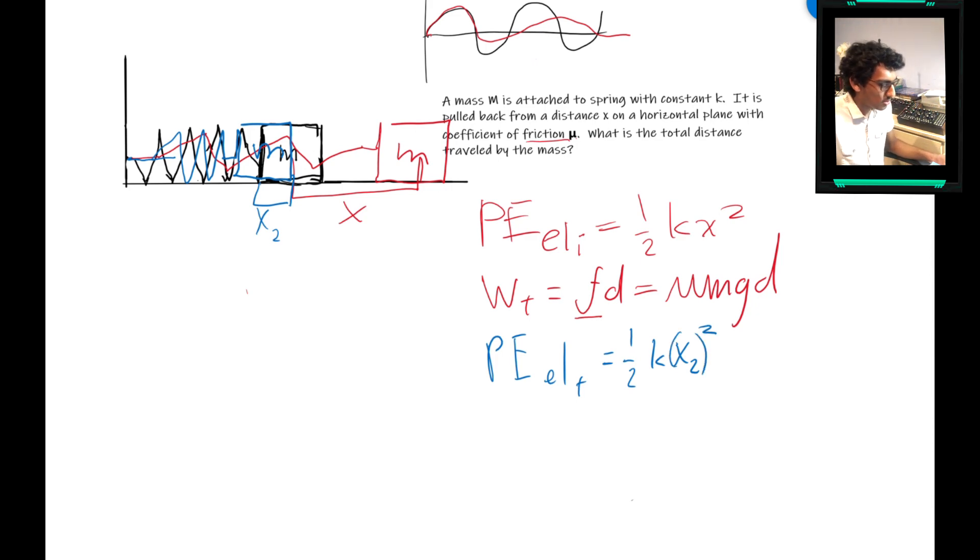And now we have to find what this x2 is in terms of the variables we know. Well, at this point, the friction force is equal to the restoring force, which is k x. That's why it stops.